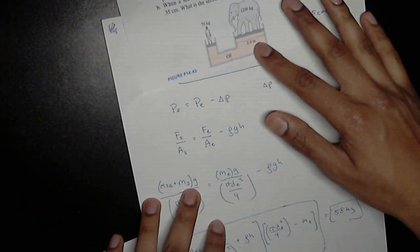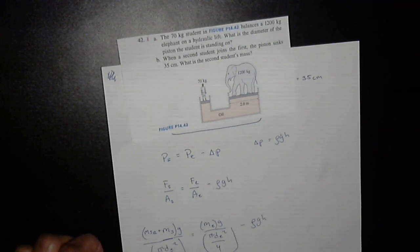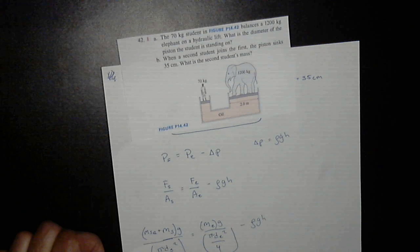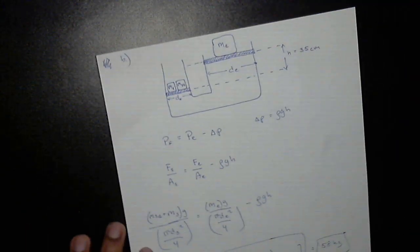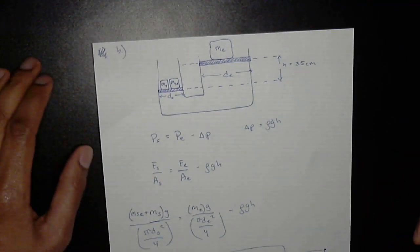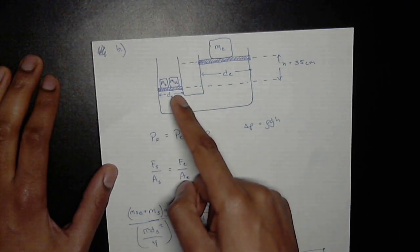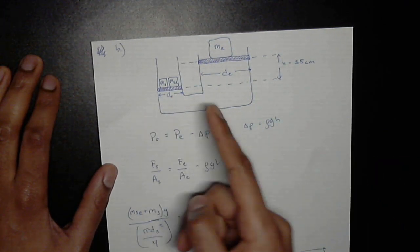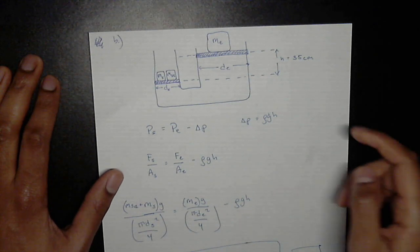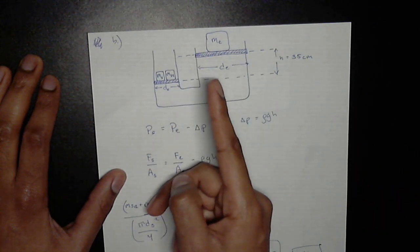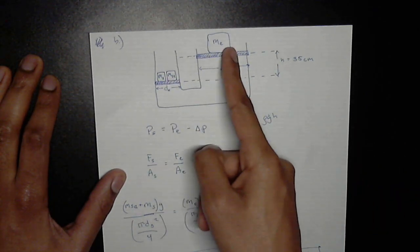So now we're going to do part b. Part b states that when a second student joins the first, the piston will sink 35 centimeters. Using that, find the second student's mass. So I drew the new picture of the new scenario. So we have another mass on the student piston, which sinks the platform 35 centimeters. So it's important to note that they're now not at the same height. This is 35 centimeters lower than this one.